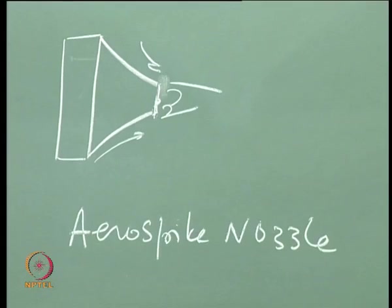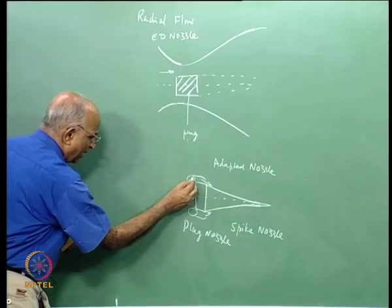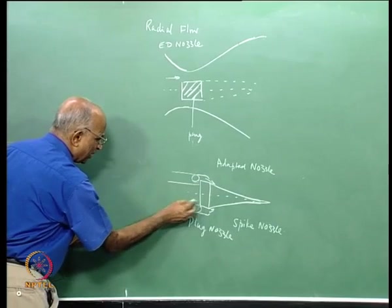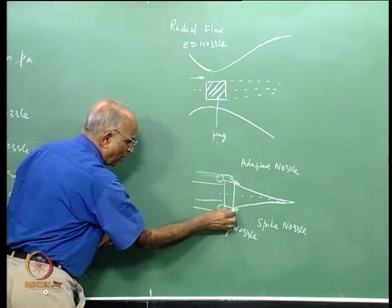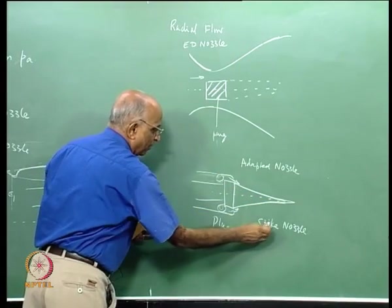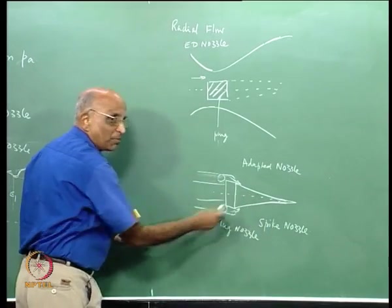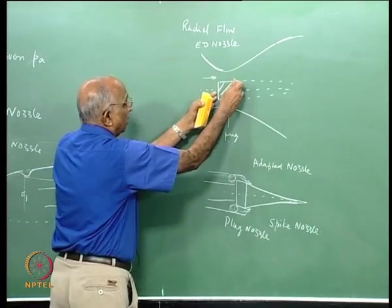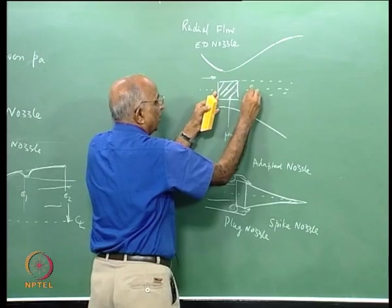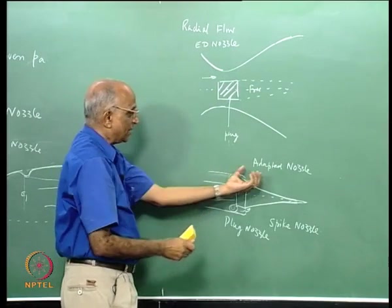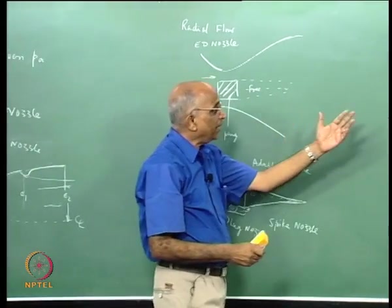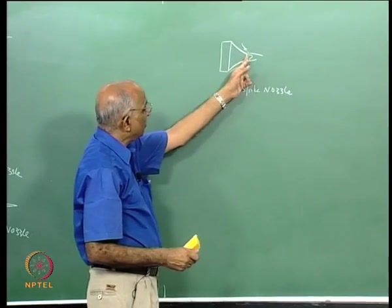To make this clear: combustion takes place in an annular combustion chamber. The flow is pushed along the spike, which regulates the pressure. Instead of an outer boundary regulating pressure, I have an inner boundary — the spike or plug — that does so. The outer surface is free, allowing adaptation to ambient pressure. The aerospike also generates additional thrust from the base recirculation region. These nozzles can all be called altitude-adaptive nozzles.